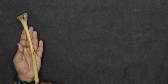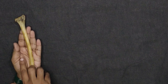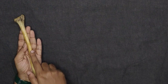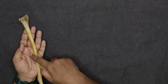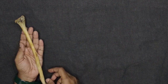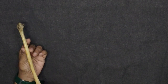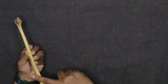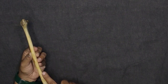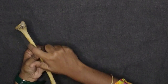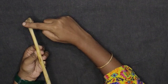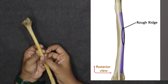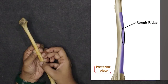The posterior surface lies between the interosseous border and the posterior border. The lateral surface has a roughened area in the middle. These are the three surfaces of the shaft: anterior, posterior, and lateral.